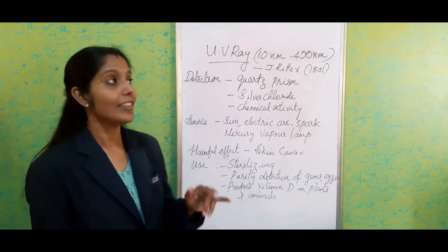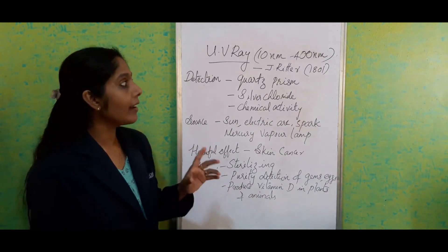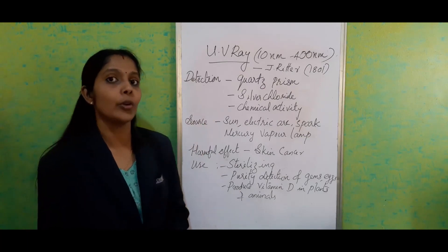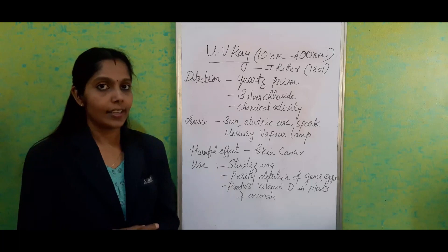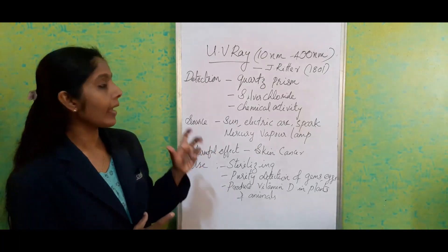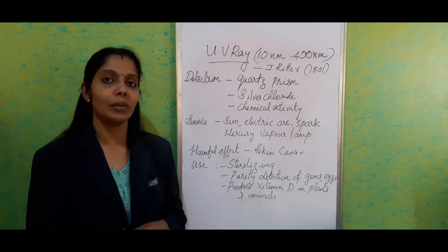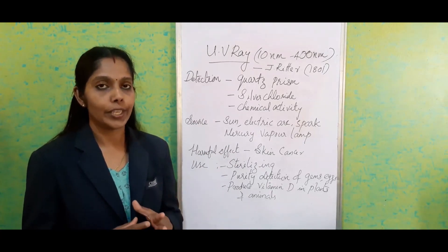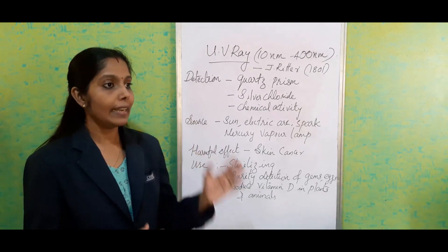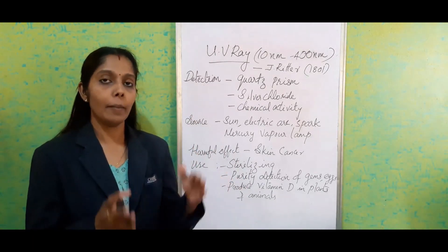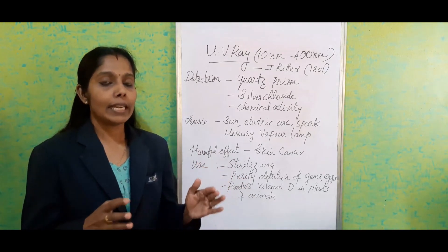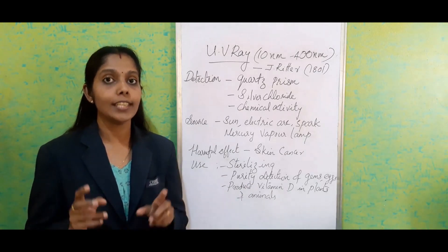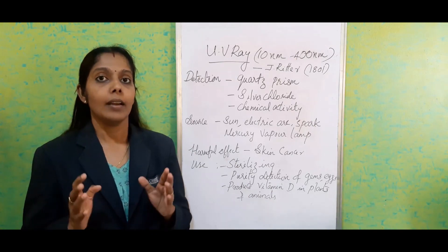Our next important ray is ultraviolet rays, with a wavelength of 10 nanometer to 400 nanometer, discovered by scientist J. Ritter in 1801. We have three methods to detect ultraviolet radiation. The first: take a silver chloride solution and allow the entire electromagnetic spectrum to pass through from the red end to the violet end. Beyond the violet end, the silver chloride solution slowly changes to violet and then dark brown, showing the presence of ultraviolet radiation.